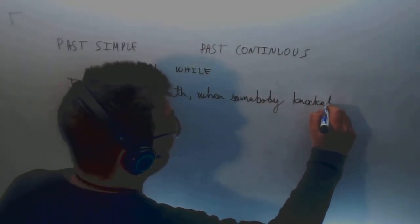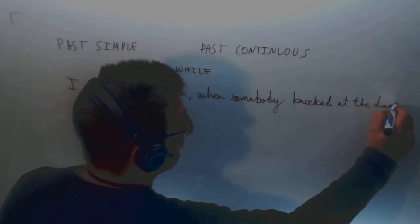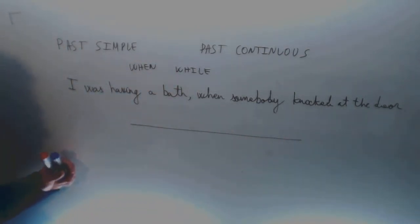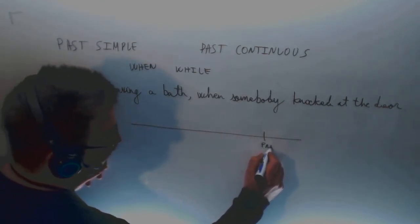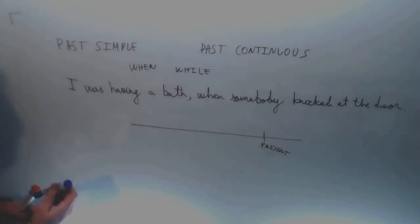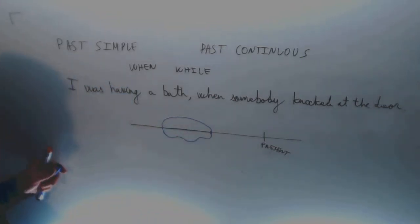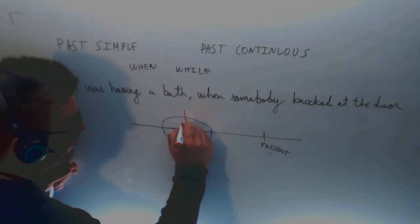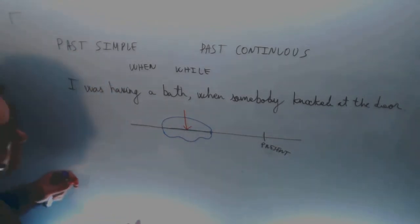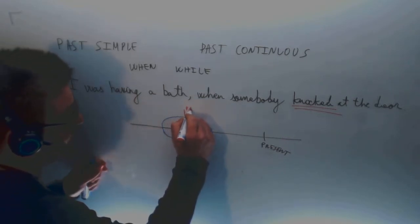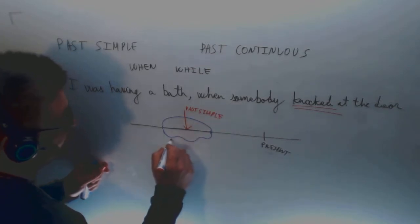Many teachers and many books use timelines to mark the present and then the past. Past continuous is something that is happening at a time in the past. This time you're having a bath, but an action written in past simple stops it. You're having a bath and then somebody knocked. Past simple, past continuous.